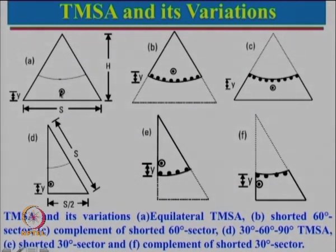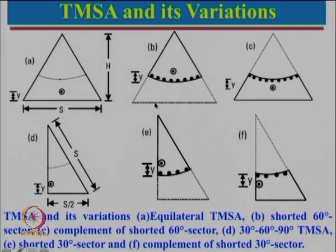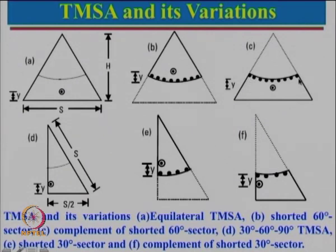If we feed on this side, then the notation will be plus, double plus, minus, double minus, and triple minus — meaning higher amplitude. Since there is a null along this axis, if we short along this line, we can discard the unused portions. This configuration is known as a shorted 60-degree sector. One can also use the complement of that configuration.